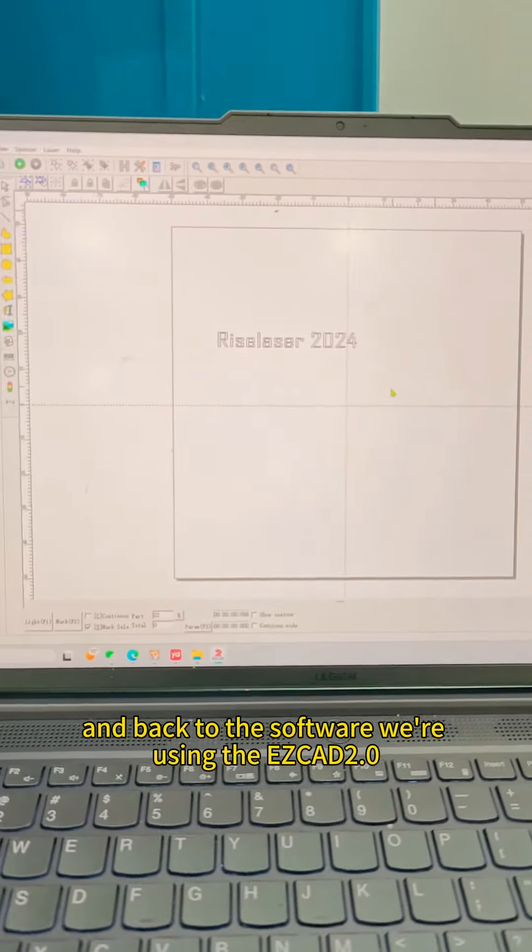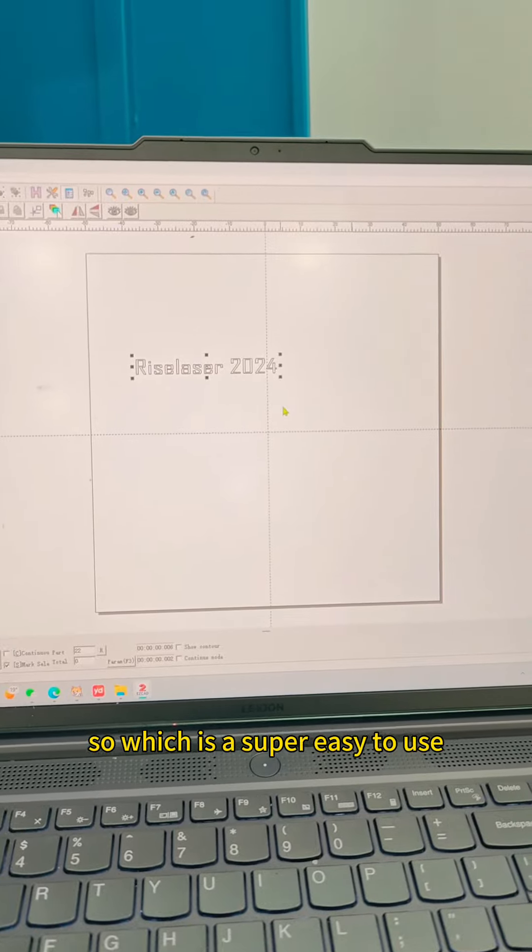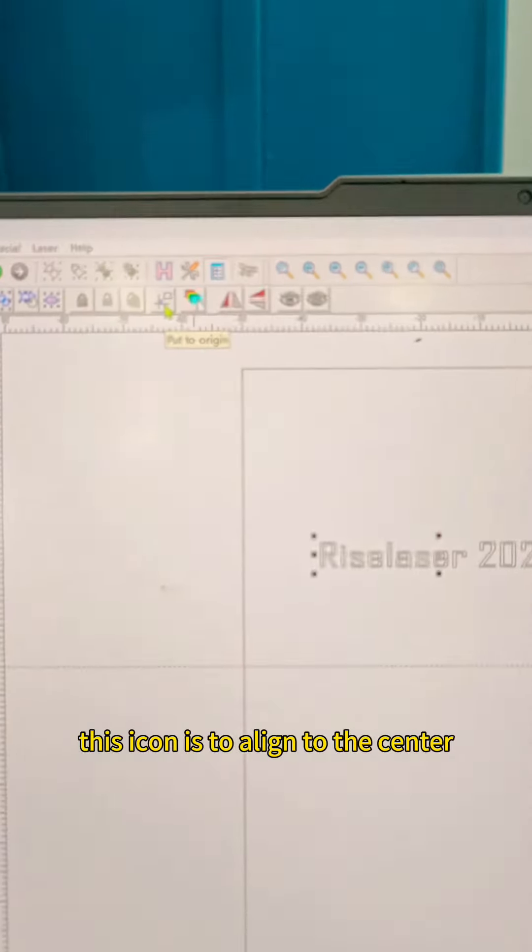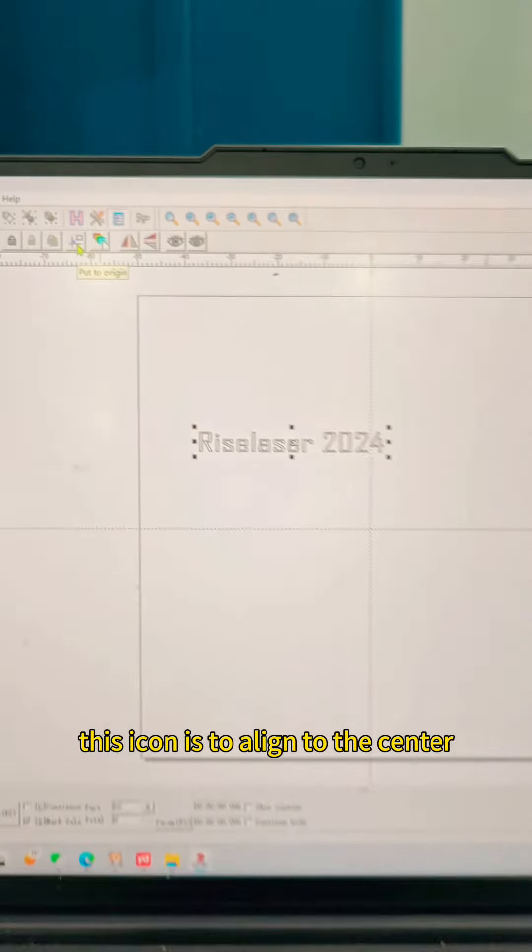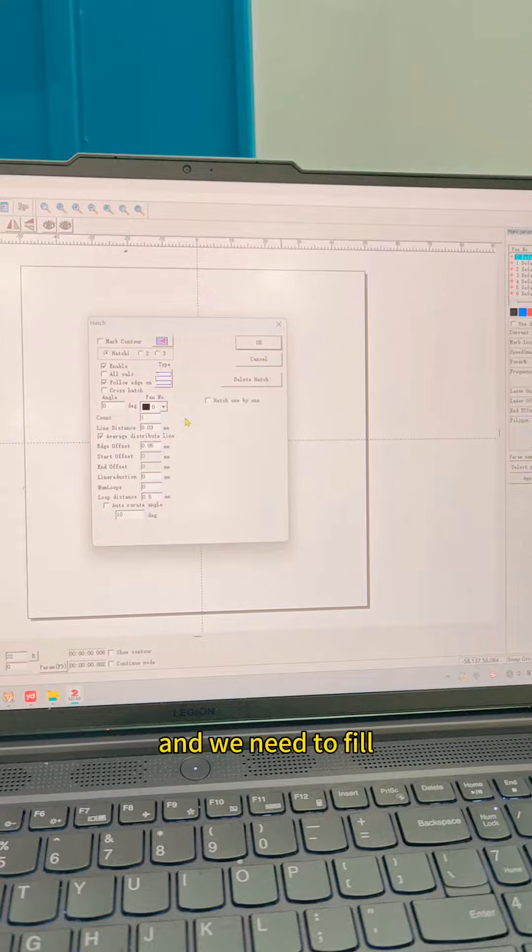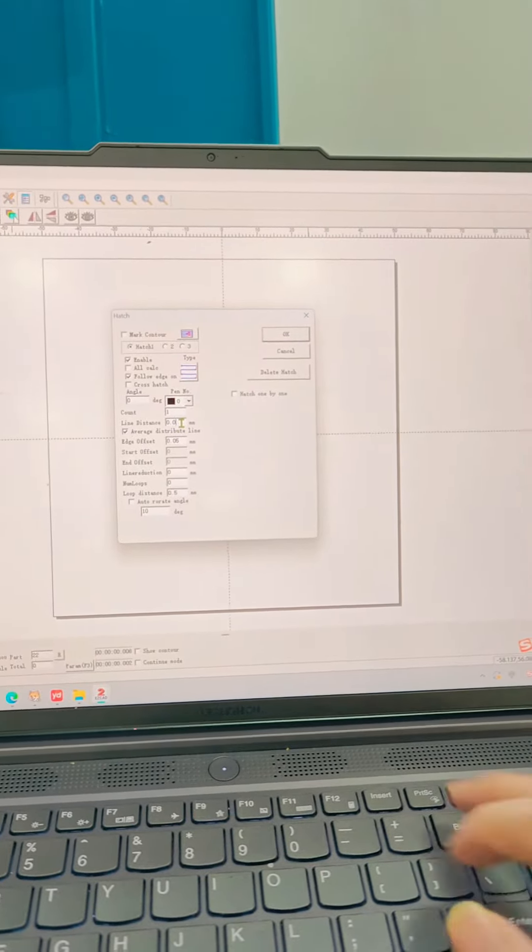And back to the software, we're using the EasyCat 2, which is super easy to use. This icon is to align to the center and we need to fill the fillings.